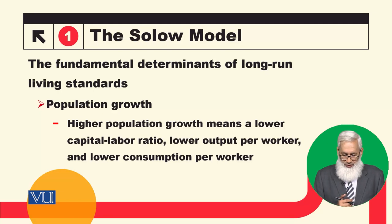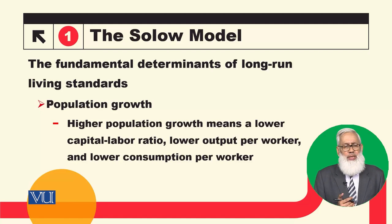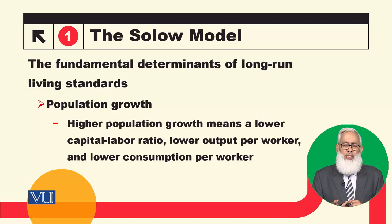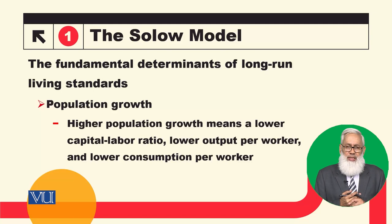Number one: higher population growth rate implies a lower capital-labor ratio. Similarly, output per worker — we divide total output by labor. When our population rapidly grows, the number of workers increases, so output per worker will decrease.